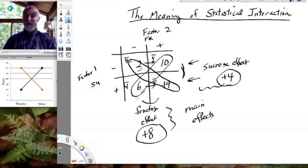That is the third possible contrast we could make, and if you look at this situation, it doesn't matter whether there's sucrose present or not, adding fructose adds 8, right? So it's a plus 8, regardless of the sucrose level. And likewise, the sucrose effect is plus 4, regardless of whether there's fructose there or not.